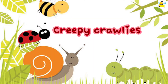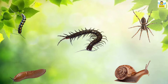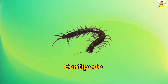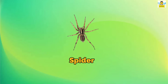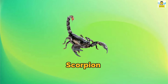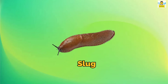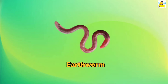Now, let's learn about creepy crawlies. Creepy crawlies have more or less than six legs. Some of the creepy crawlies are snail, centipede, spider, scorpion, caterpillar, slug and earthworm.